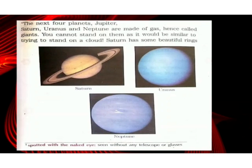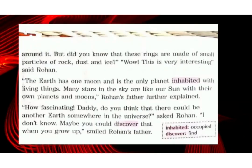'The next four planets — Jupiter, Saturn, Uranus and Neptune — are made of gas. Hence they are called gas giants. You cannot stand on them, as it would be similar to trying to stand on a cloud. Saturn has some beautiful rings around it, but did you know that these rings are made of small particles of rock, dust and ice?'